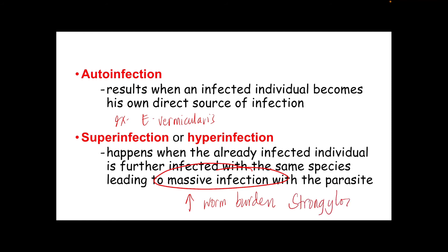Strongyloides is a nematode that can infect humans. A human host could experience super-infection whenever there is a large increase in worm burden, which may lead to severe debilitation or even death due to an increase in the proportion of larvae of Strongyloides that transform into another larval stage while present in the intestine.